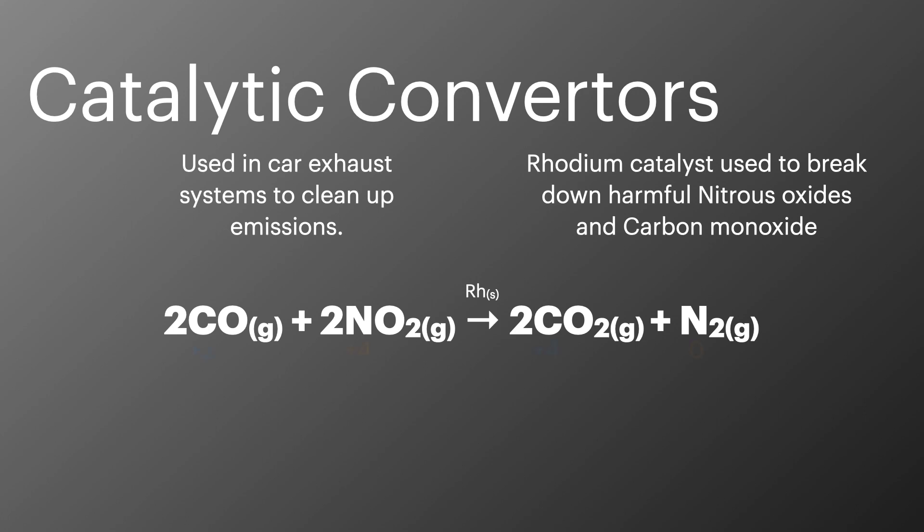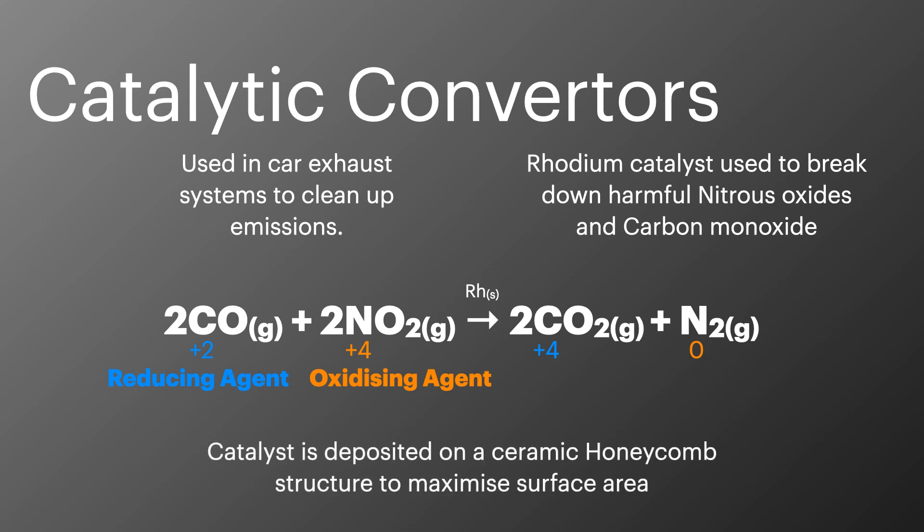You should be able to identify carbon monoxide as the reducing agent and nitrogen dioxide as the oxidising agent in this reaction. To maximise the effectiveness of these expensive metals they are usually deposited on a honeycomb structure to maximise their surface area.